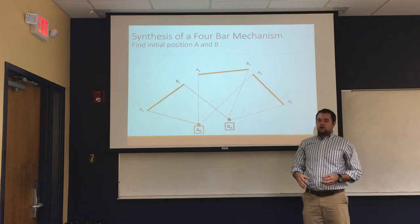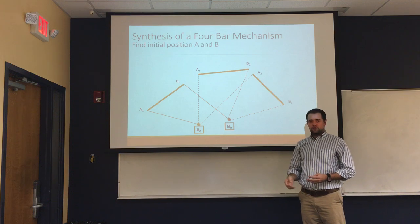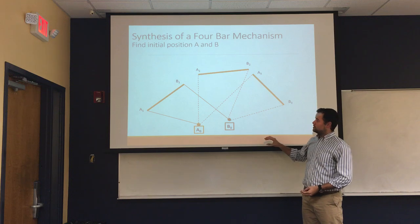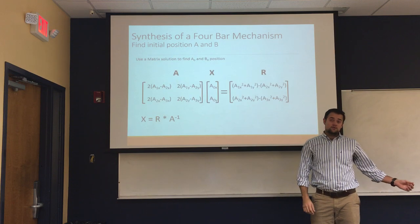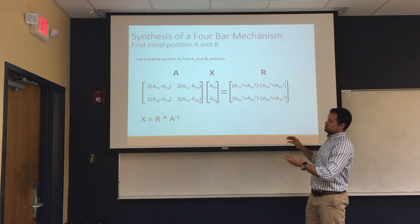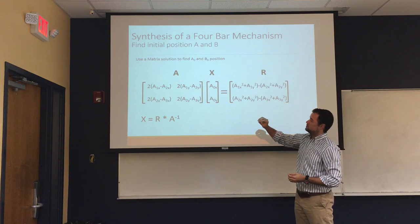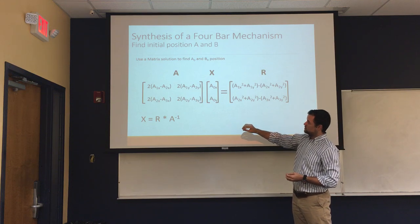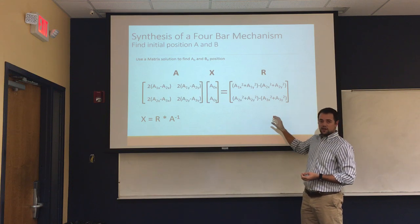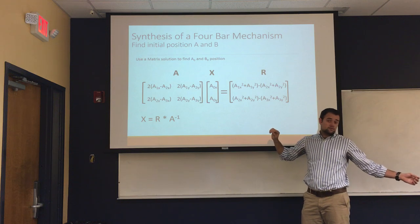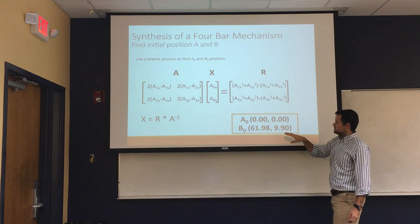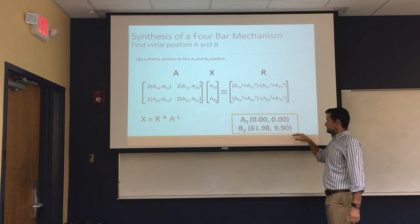So, to know how our four-bar mechanism is going to work, we first need to find our A initial and our B initial, so we can form our mechanism. How do we get our A and B initial? First we use a matrix solution, where we have to put our given numbers, A1X, A2X, and we get this formula. And then we got A initial and B initial. So, our A initial is going to be at the origin, and B initial is going to be at 62.9 and 10.1.